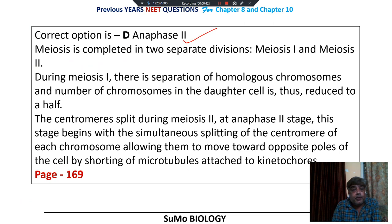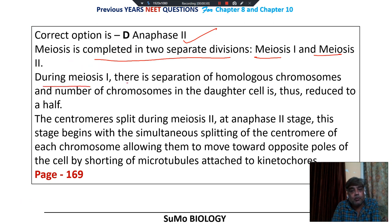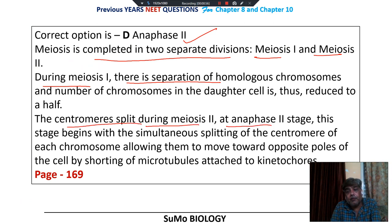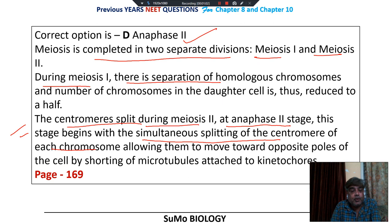The correct option is option number D. Meiosis is completed in 2 separate divisions: meiosis 1 and meiosis 2. During meiosis 1, homologous chromosomes get separated. In meiosis 2, the centromere is split at the anaphase 2 stage, which begins with the simultaneous splitting of centromeres of each chromatid. This is written on page number 169 of NCERT volume 1.